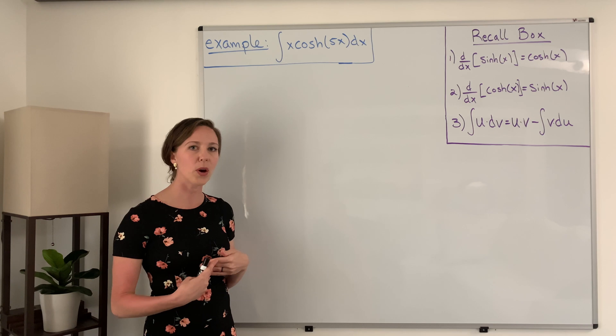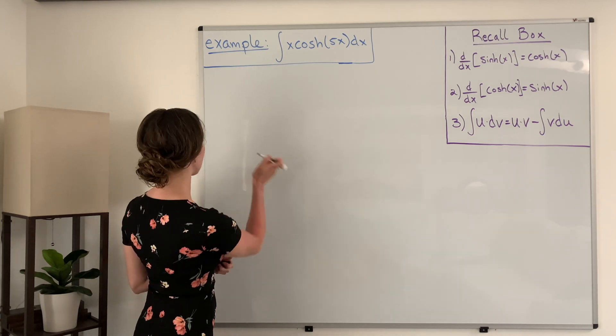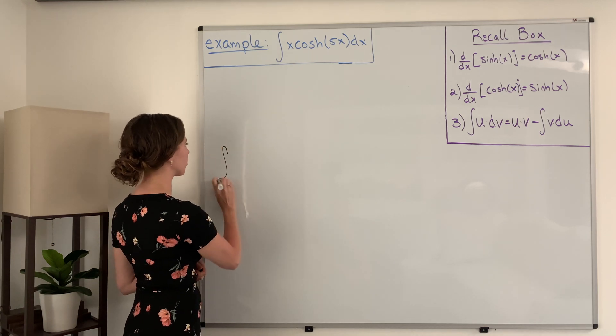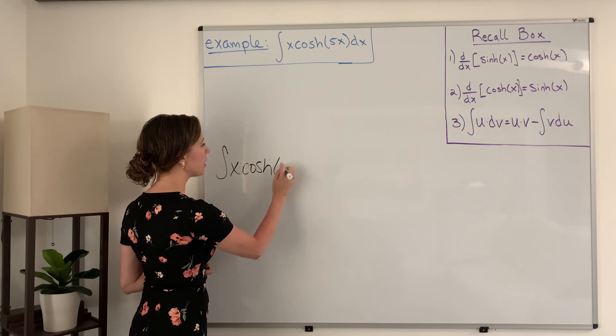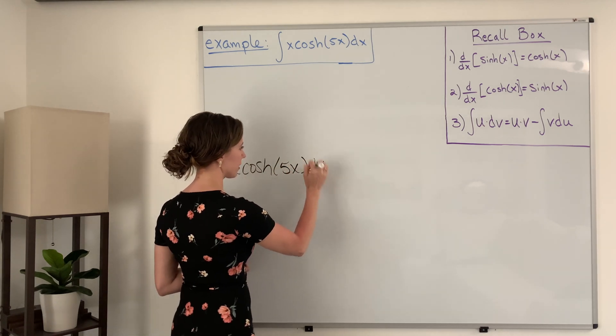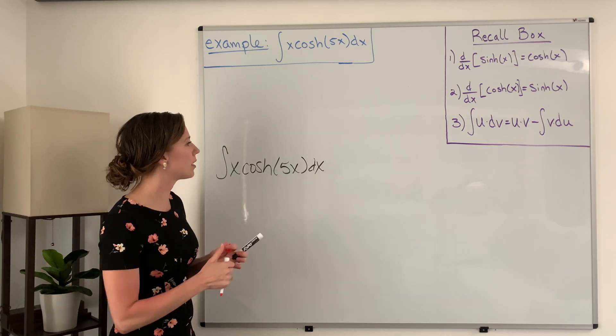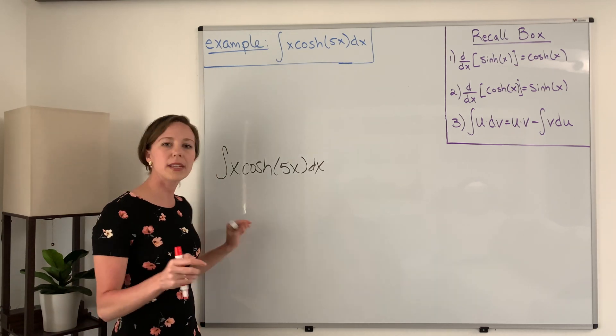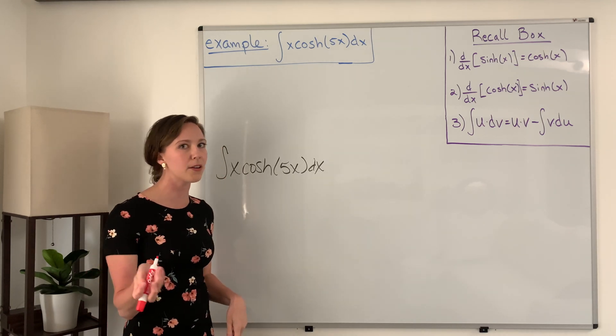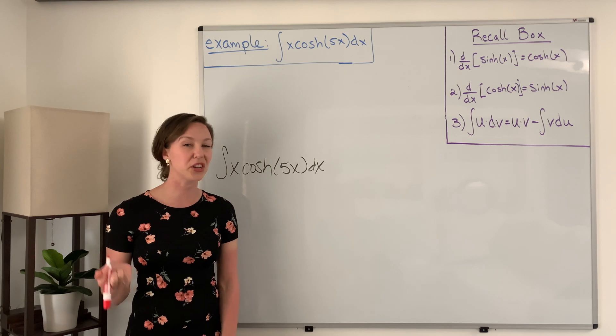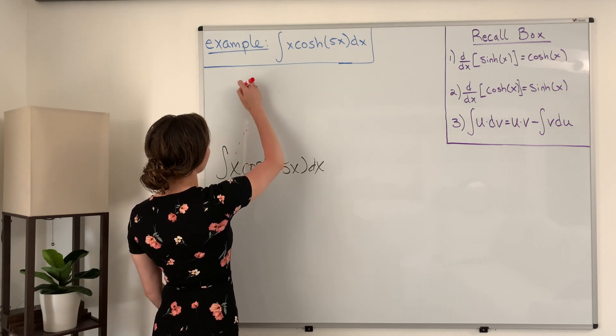So for this problem we're taking the integral of x times the hyperbolic cosine of 5x dx, and so when we're picking our u and our dv, since if I take the derivative of x I only have to take two derivatives in order to get to zero, that's probably going to be a good choice for u. So I'm going to pick for my u the x function.